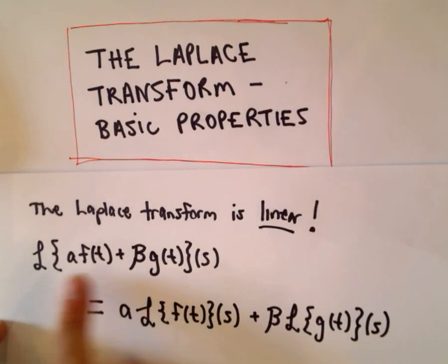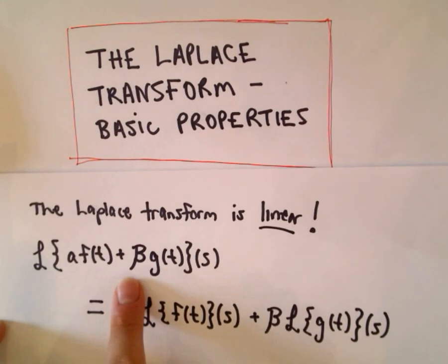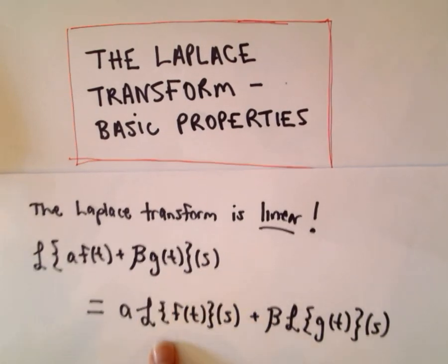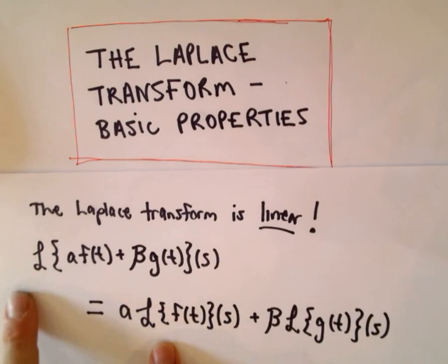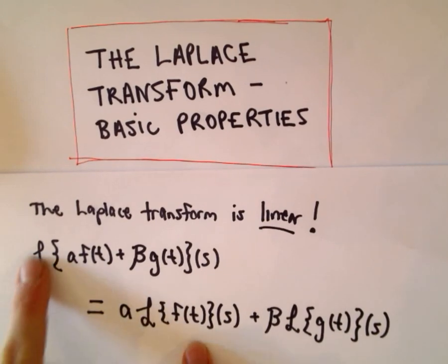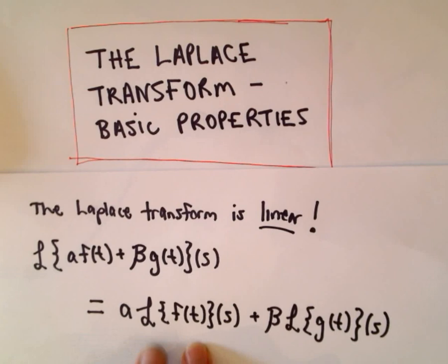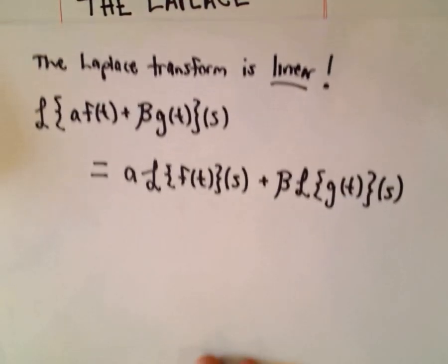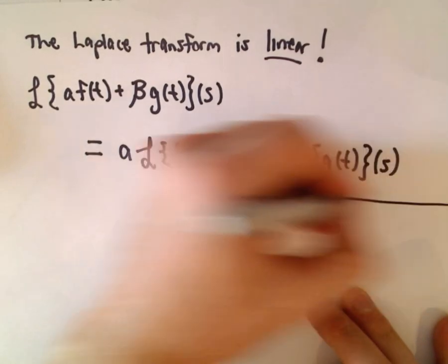It says if you take the Laplace transform of a times f of t plus b times g of t of s, it says basically you can just imagine distributing the Laplace operation. So you can pull the a out and we'll get the Laplace transform of f of t of s plus b times the Laplace transform of g of t of s. And this is again a very nice property.